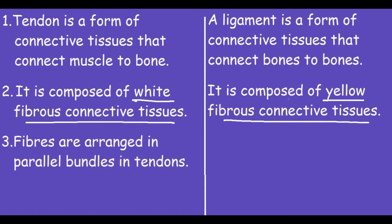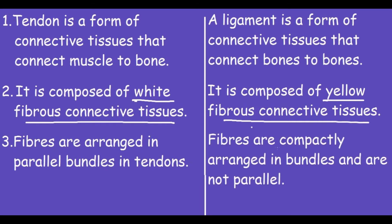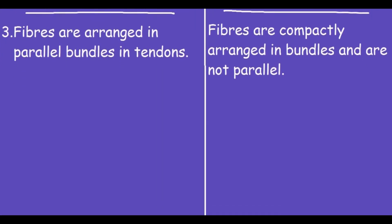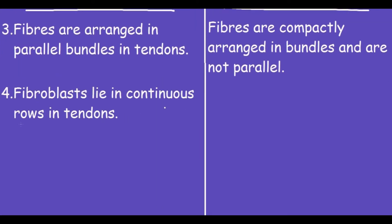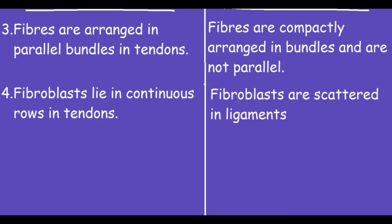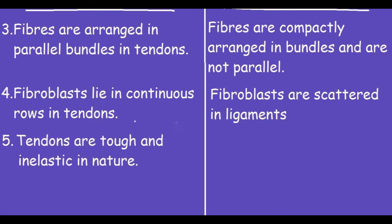Fibers are arranged in parallel bundles in tendons, whereas in ligaments, the fibers are compactly arranged in bundles but are not parallel. Additionally, fibroblasts lie in continuous rows in tendons, while fibroblasts are scattered in ligaments.